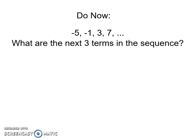I'm going to propose a question. If we have this sequence: negative 5, negative 1, 3, and 7, what are the next three terms? Try it out, and then resume when you're ready to hear the answer.